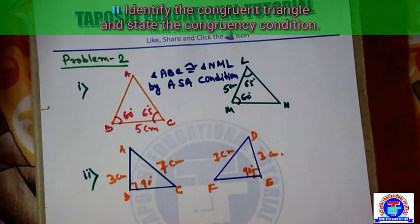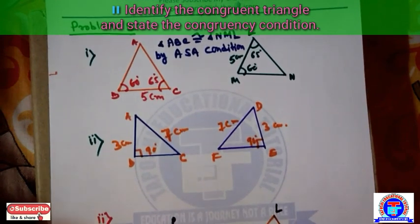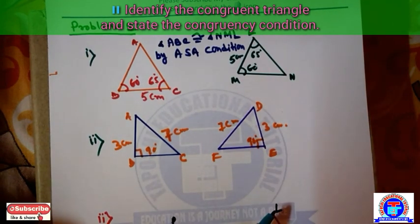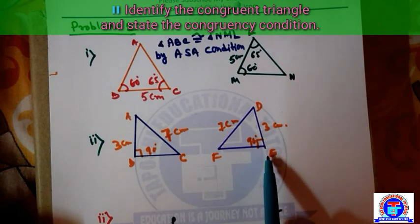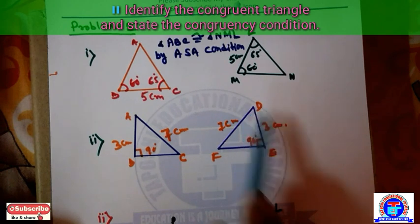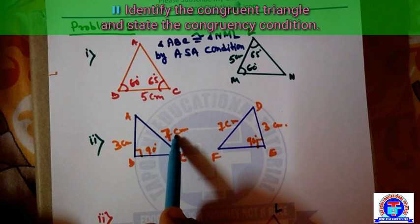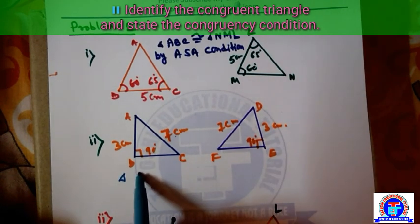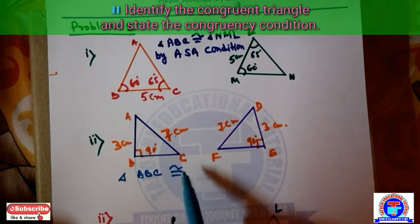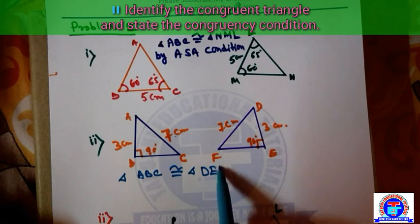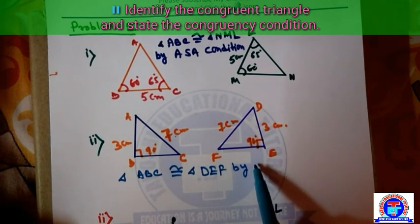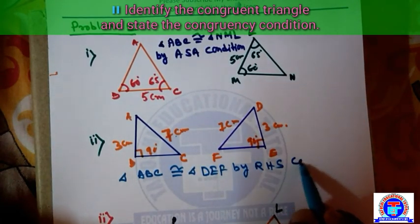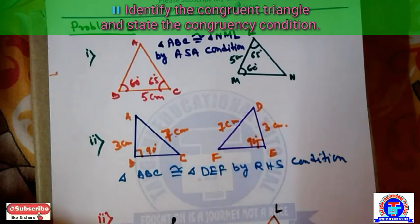Another problem: triangle ABC and triangle DEF, where angle B is 90 degrees and angle E is 90 degrees. AB is equal to DE, both 3 cm, and AC is equal to DF, both 7 cm. Therefore, triangle ABC is congruent to triangle DEF by the RHS condition — that is, Right Angle-Hypotenuse-Side condition.